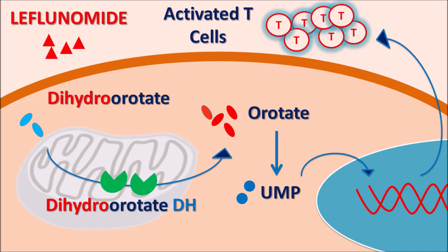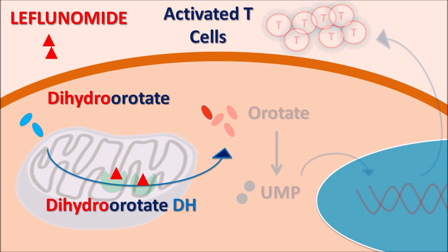Leflunomide blocks T cell activation by acting on the dihydroorotate dehydrogenase enzyme, inhibiting its activity. When this enzyme is inhibited, pyrimidine synthesis decreases and T cell proliferation is reduced. When T cells are not proliferated, the immune response as well as inflammation can be controlled. In this way, leflunomide acts as an anti-inflammatory agent as well as an immunosuppressant.